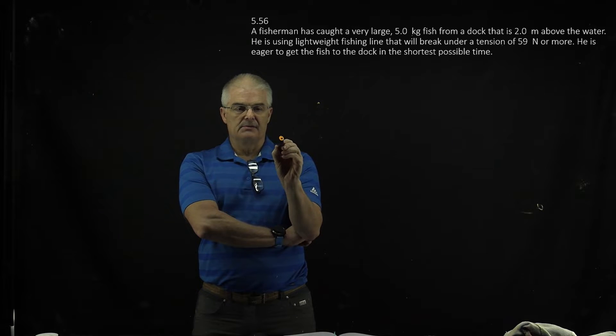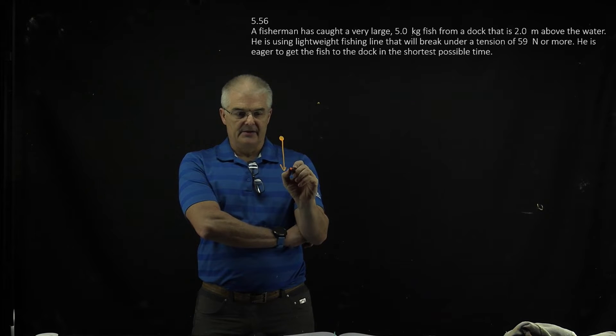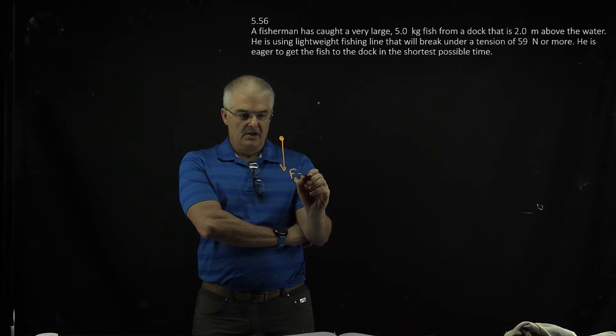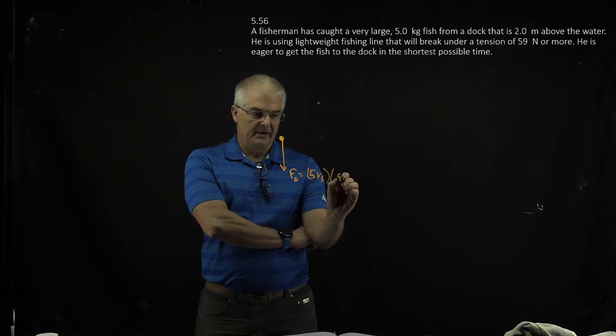As you look at this question, I think it's most important to start with a free-body diagram. So pushing down is the force of gravity on the fish, which is going to be the mass of the fish, which is 5 kilograms, times 9.8.